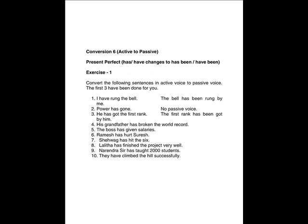So now we come to Conversion 6 — Active to Passive, Present Perfect. Now again, as I said, from now everything will be either 'be', 'been', or 'being'. We have seen the addition of 'be' in will-sentences, and 'being' in continuous tenses. Now here you have 'has' and 'have', and that changes to 'has been' or 'have been' — you add 'been' to make it into the passive voice. Convert the following sentences in active voice to passive voice. The first three have been done for you.